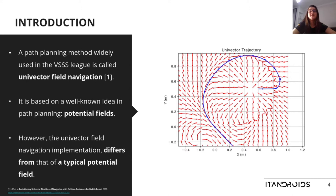A path planning method widely used in the VSSS league is called univector field navigation. It is based on a well-known idea in path planning: potential fields. This method uses an analogy between a soccer field and a field that contains positive and negative electrical charges. In this field, each robot sees the other robots and the field walls as charges of the same signal, since it intends to avoid collision with these obstacles and therefore to be repelled from them. In addition, the robot sees the ball as a charge with the opposite signal, since it intends to score goals and therefore to be attracted to it.